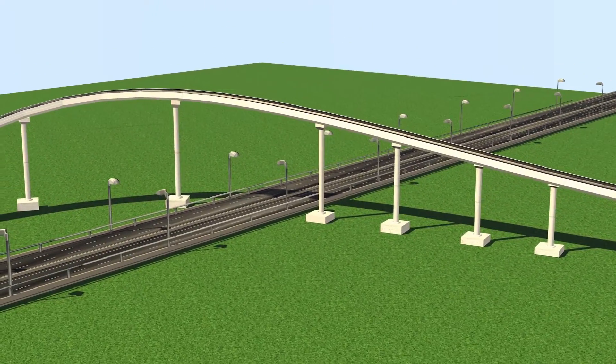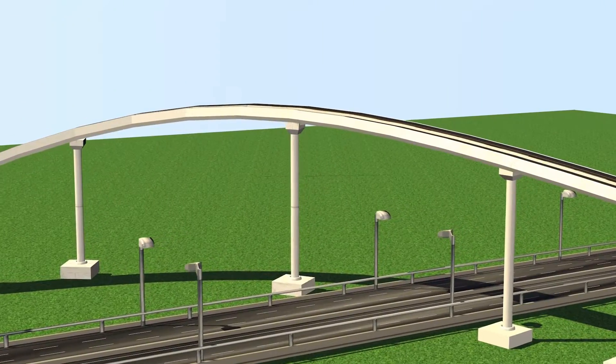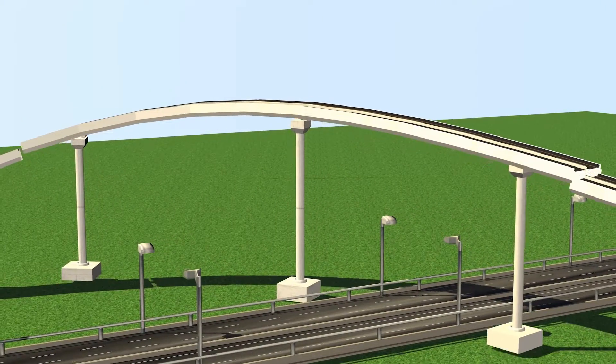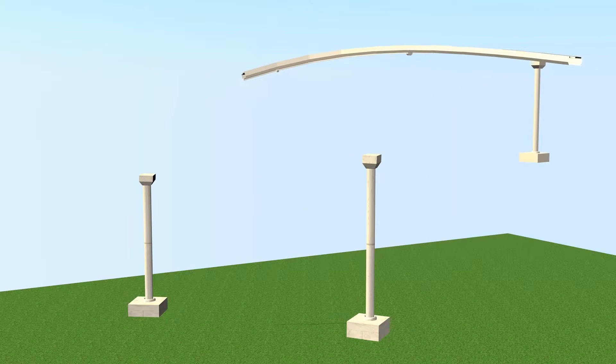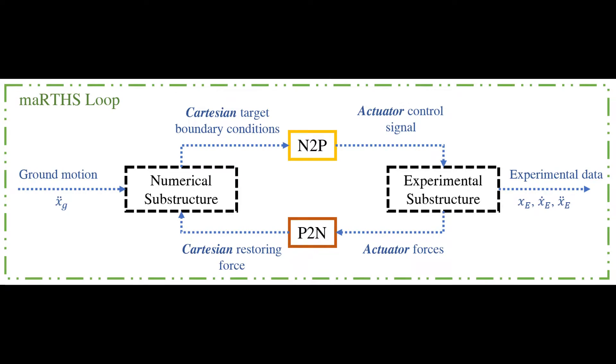Let's imagine an illustrative example including a multi-span curved bridge structure subjected to earthquake motion, where the curved deck and one pier are numerically modeled while two other piers are tested physically. At each time step, ground motion excites the numerical model.